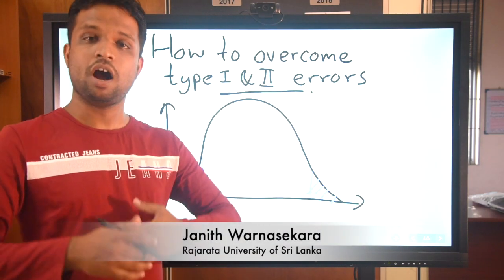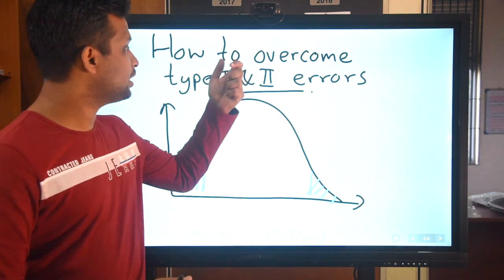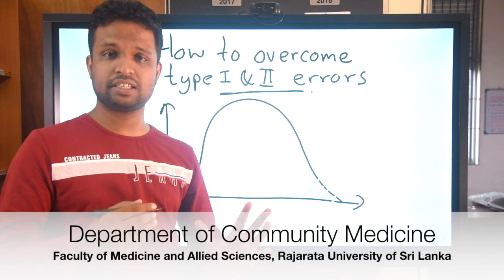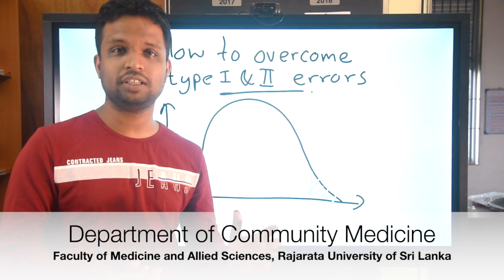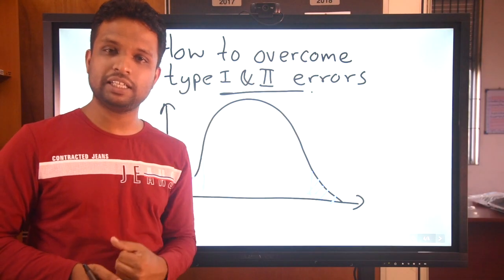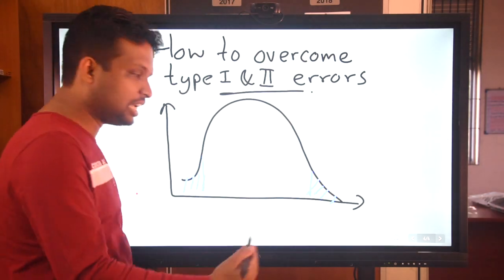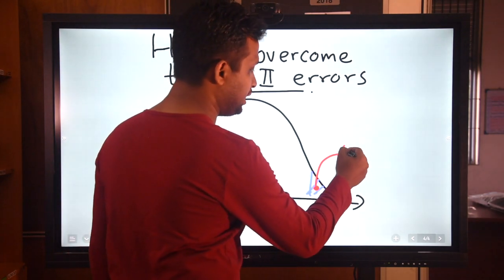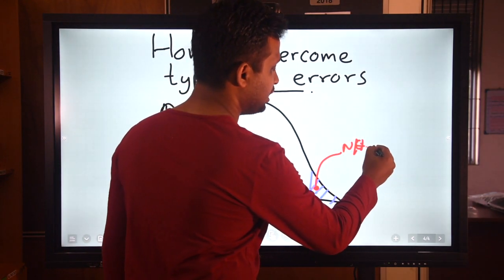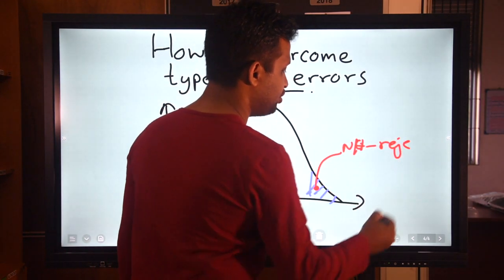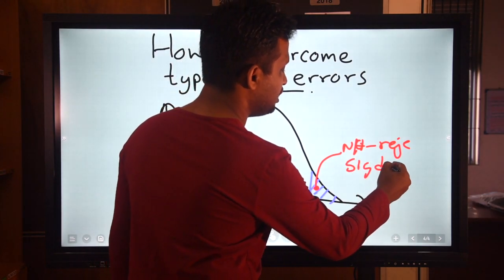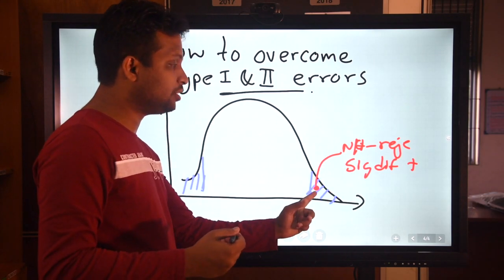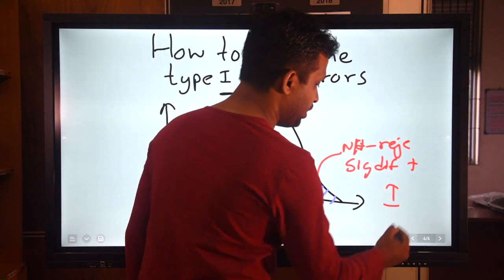Welcome to the lecture on how to overcome Type 1 error and Type 2 error in statistics. In the previous lecture, we discussed in detail about Type 1 and Type 2 error. If we recall, assume that we have misclassified a sample into the rejection region, and we come to the conclusion that the null hypothesis is rejected — a significant difference is found — but this conclusion is wrong. That is Type 1 error.